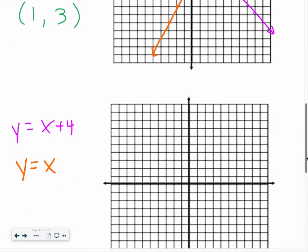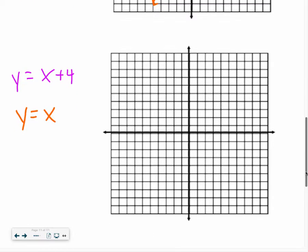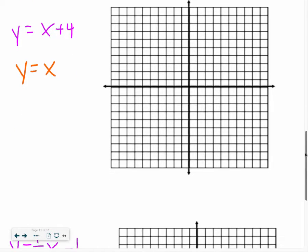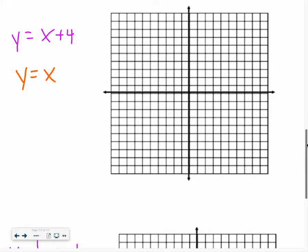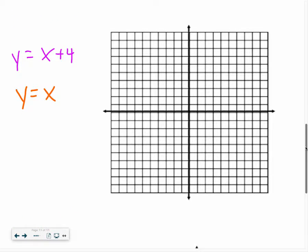Let's take a look at this next system. My smart board is being really glitchy right now, so I apologize. We have y equals x plus 4, so I start up at 4 and I have a slope of 1. So I draw my line as best as I can. And then I have y equals x, my slope is 1.